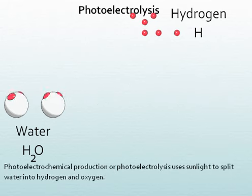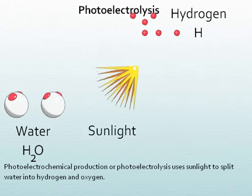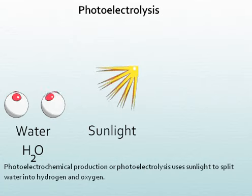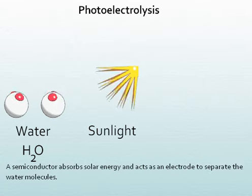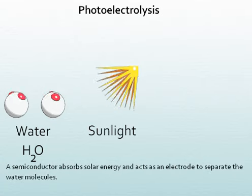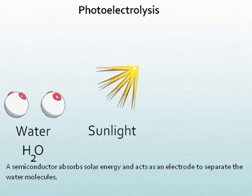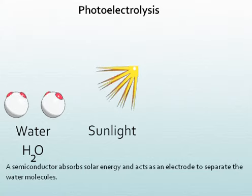Photoelectrochemical production, or photoelectrolysis, uses sunlight to split water into hydrogen and oxygen. A semiconductor absorbs solar energy and acts like an electrode to separate the water molecules.